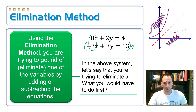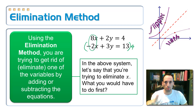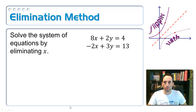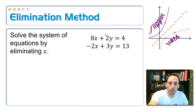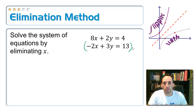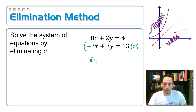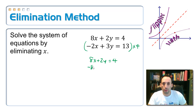I could also multiply by something to get the y's to disappear, but this one was just easier because one was positive and one was negative. So let's solve this system using elimination. Multiply the second equation by 4. The top equation stays the same: 8x plus 2y equals 4. Then multiply everything in the bottom equation by 4: negative 8x plus 12y equals 52.